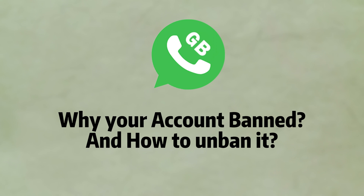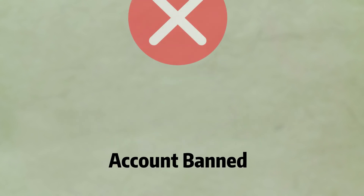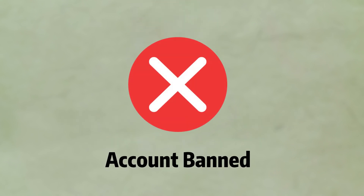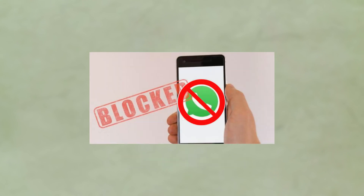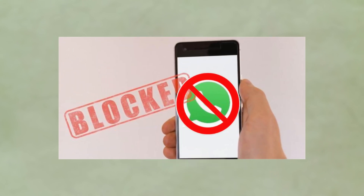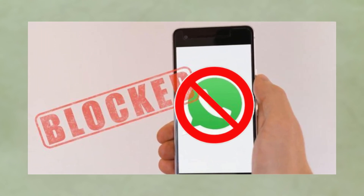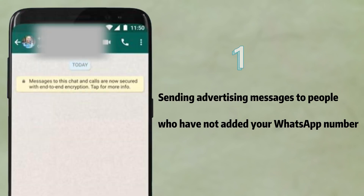Usually there is no account banned as long as you use it normally. If your account is banned, you'll see the following message when you open WhatsApp: 'This account is not allowed to use WhatsApp.' We ban accounts if we believe the account activity violates our terms of service as follows.